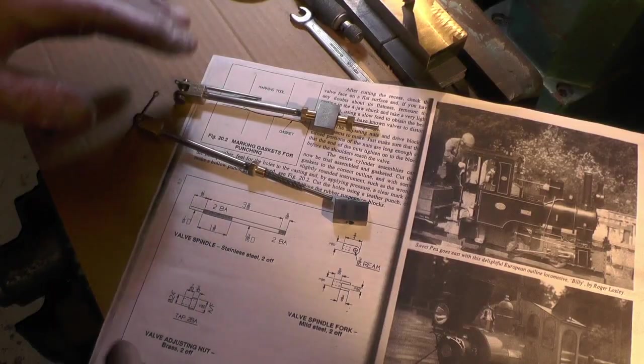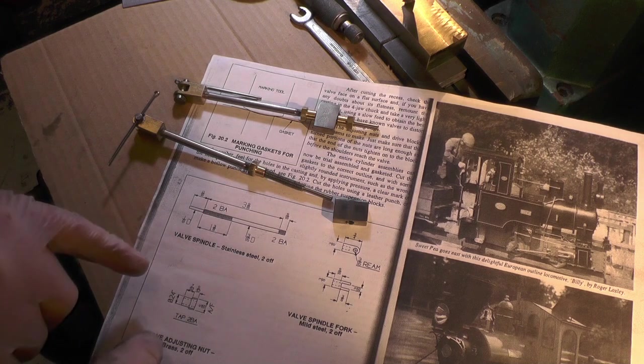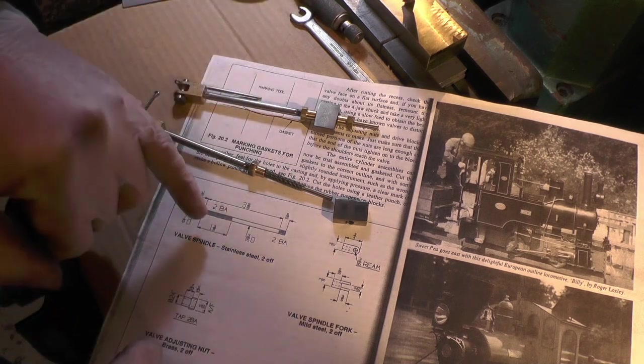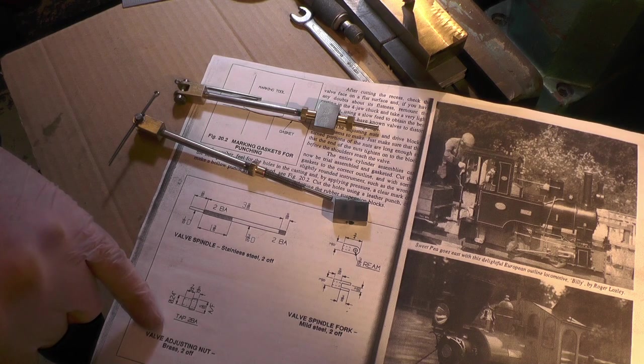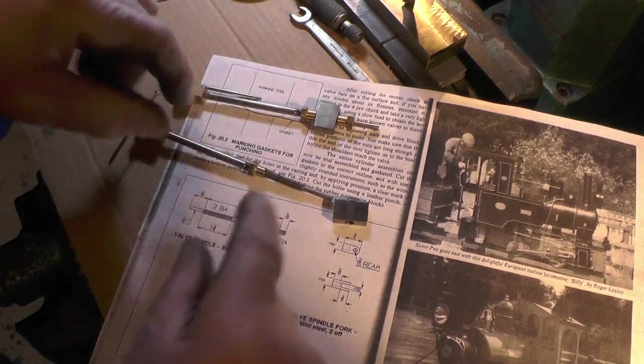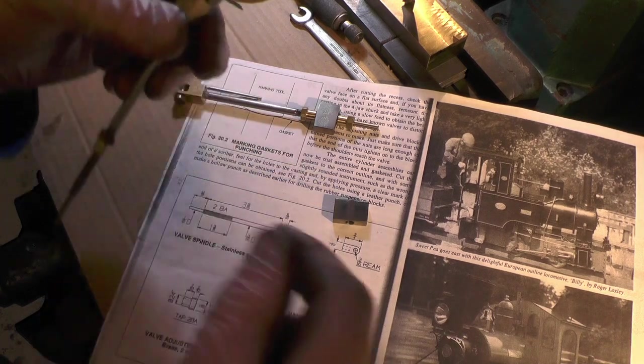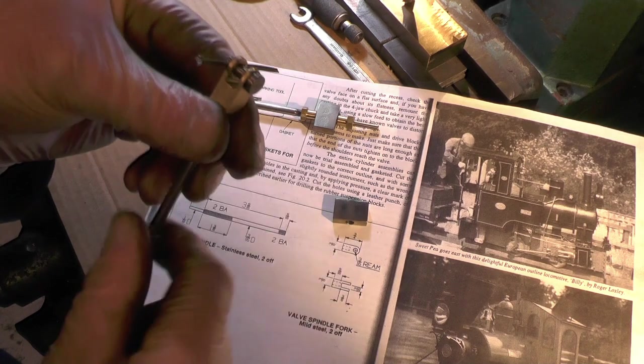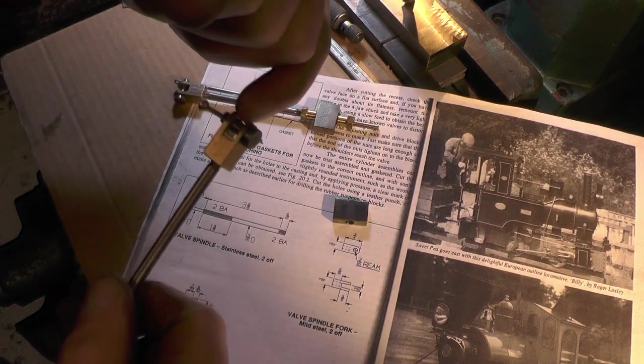I'll just explain exactly what I've been doing on the lathe. I've been making the other components here that belong to the valve: that's the spindle, the valve adjusting nuts, and the spindle fork. And also, that's not shown on any of the drawings, is the actual pivot pin that holds this into the other part of the fork on the loco.